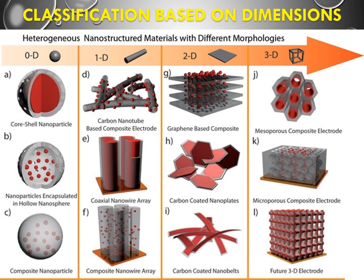Based on the dimensions of nanomaterials, they are classified into four types: 0-dimensional, 1-dimensional, 2-dimensional, and 3-dimensional. Zero-dimensional means all three dimensions of the nanomaterial — along the x-axis, y-axis, and z-axis — are within the nanoscale region, i.e., below 100 nanometers. Don't confuse: 0-dimensional means no dimension is above the nanoscale.